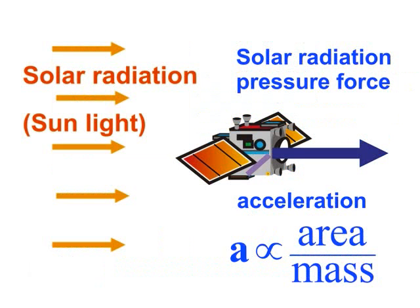Solar radiation pressure, or pressure of the solar light, causes changes in satellite orbits. The effect is proportional to the spacecraft's effective area and inversely proportional to its mass. Therefore, radiation pressure is especially important for small spacecraft and orbiting debris, as well as for space objects with large area-to-mass ratios, such as detached and free-floating sheets of multi-layer insulation.